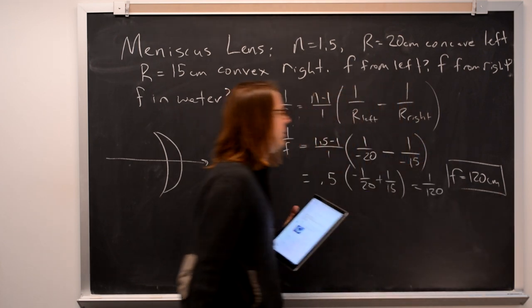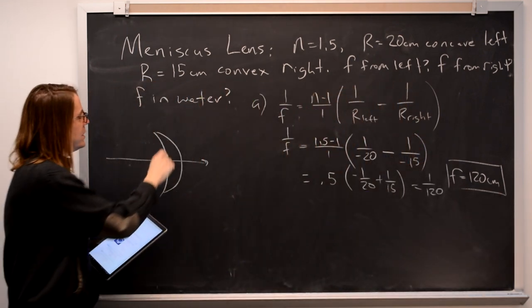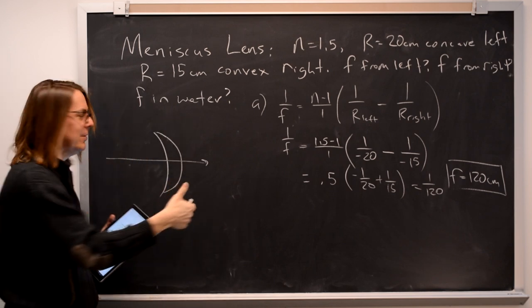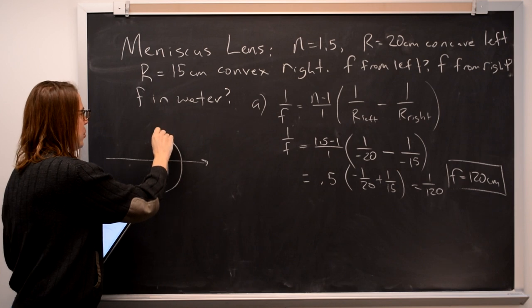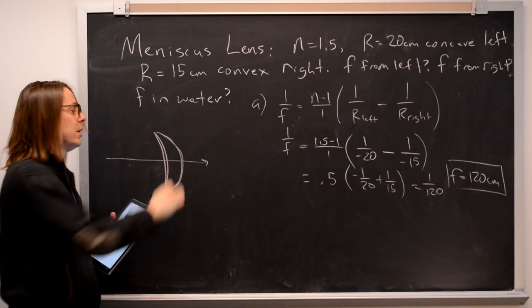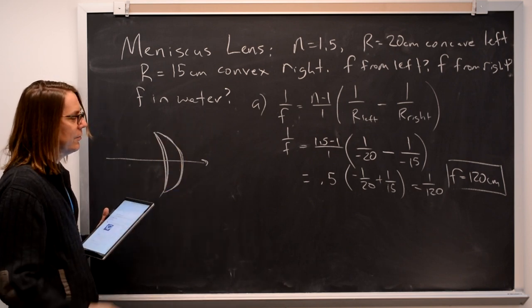So that means that this lens is converging. And the reason it's converging is that the convex side has a sharper curvature, a smaller radius than the concave side. That's why the convex converging side basically wins. That's a positive lens, a converging lens.